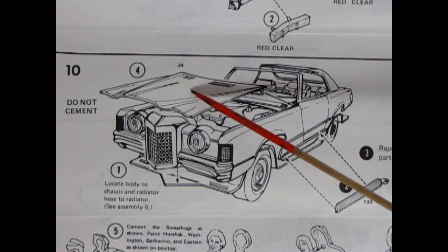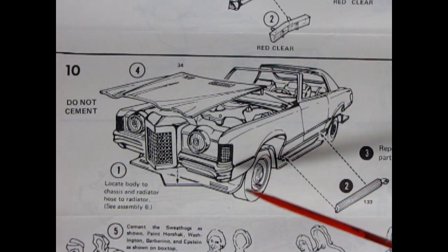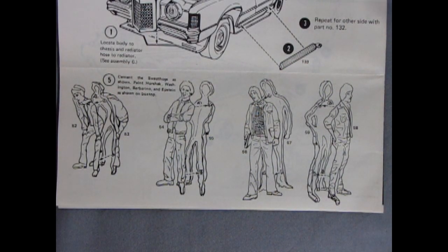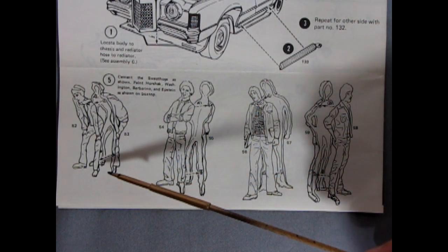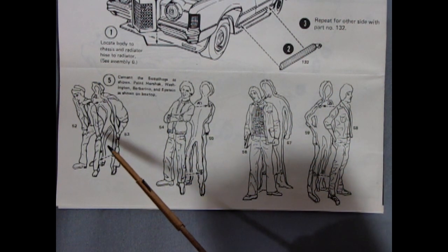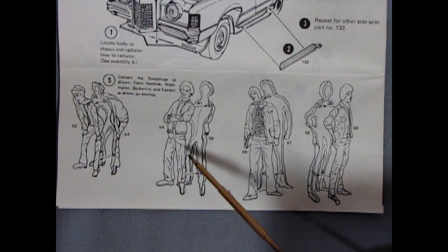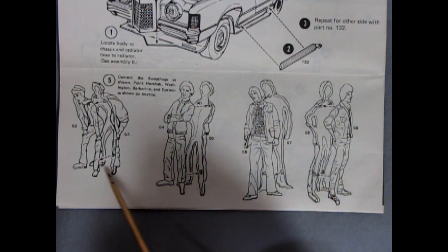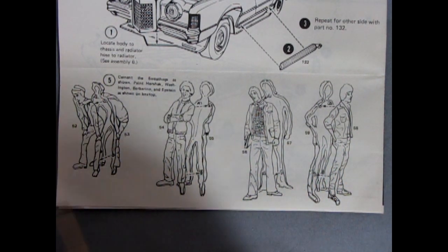Panel 10 shows our hood being placed on, and then our body dropping onto the chassis. And then here we have these nice side pipes, which we'll glue down here on the lower rocker panels. This panel of our instruction sheet shows our four figures and what they look like, and also their relationship to the car. So here we have Horshack bending over to look in the trunk, Washington standing up talking with Barbarino and Epstein. And it says to paint all these figures as shown on the box top.